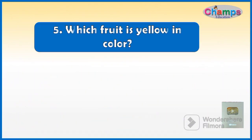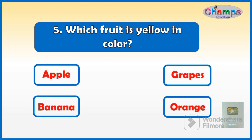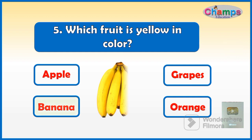Which fruit is yellow in color? Your options are: Apple, Grapes, Banana, Orange. And your time starts now. And the correct option is Banana.